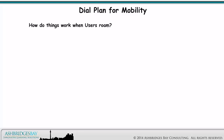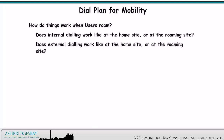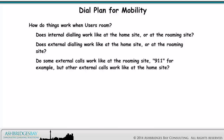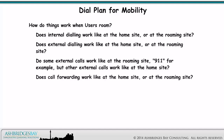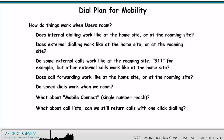How do things work when users roam? Does internal dialing work like at the home site or at the roaming site? Does external dialing work like at the home site or at the roaming site? Do some external calls work like at the roaming site — 911 for example — but other external calls work like at the home site? Does call forwarding work like at the home site or at the roaming site? Do speed dials work when we roam? What about mobile connect, single number reach? What about call lists? Can we still return calls with one-click dialing? Do we send the right caller ID?